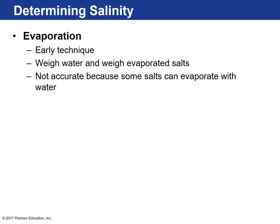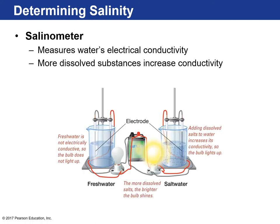To determine salinity, one early method is evaporation: get some seawater, let it evaporate, then measure what's left behind. However, this isn't very accurate because some salts evaporate with the water, causing underestimation of salinity. Later, the salinometer was developed — it measures the water's electrical conductivity. The more dissolved substances in water, the more efficiently electrons move through it; the saltier the water, the more conductive it is.